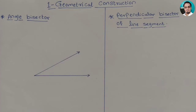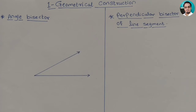In geometrical constructions, first of all we should know about what is an angle bisector and a perpendicular bisector of a line segment. An angle bisector means that angle is divided equally into two parts.